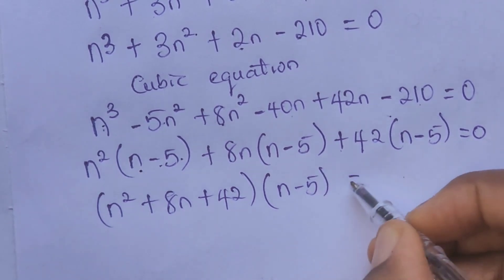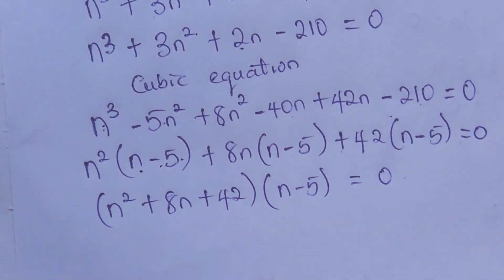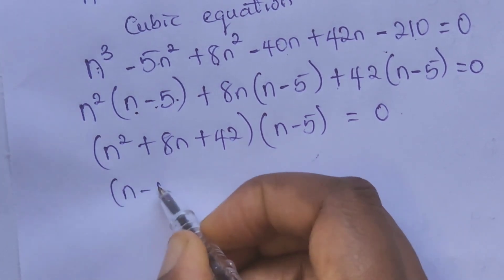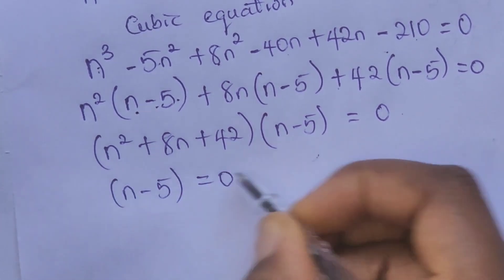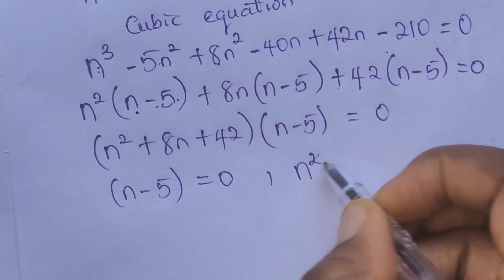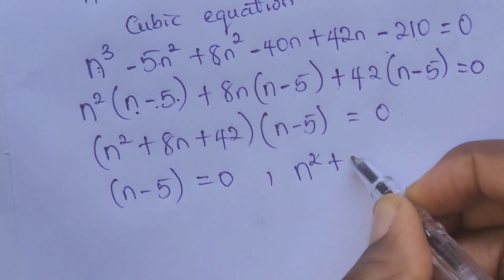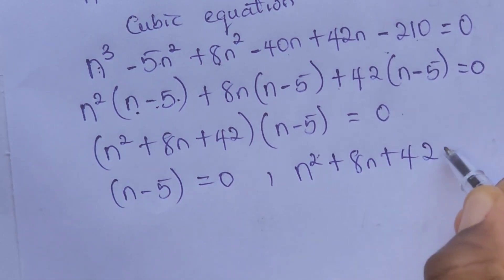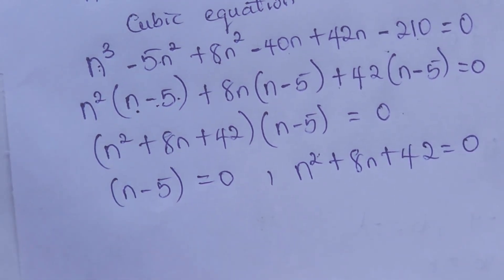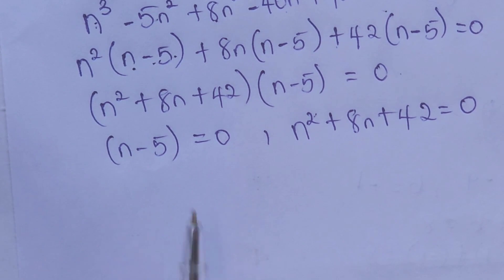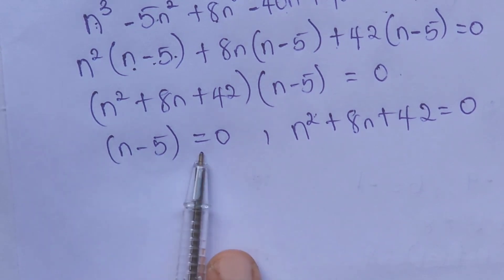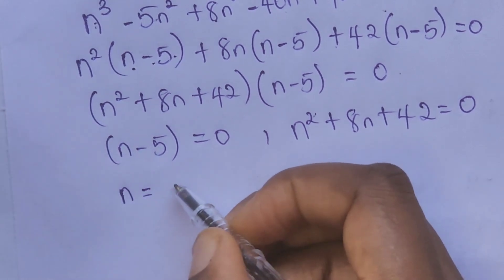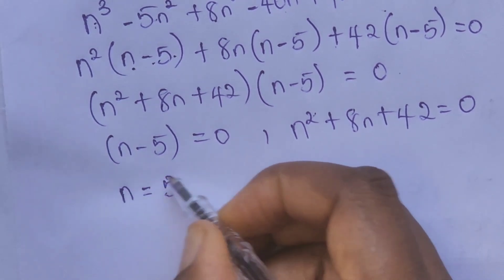This gives us two equations: n minus 5 equals zero, and n squared plus 8n plus 42 equals zero. From the first equation, n is equal to 5.